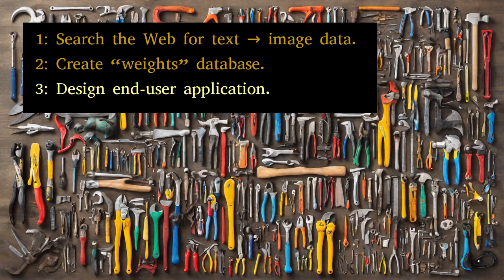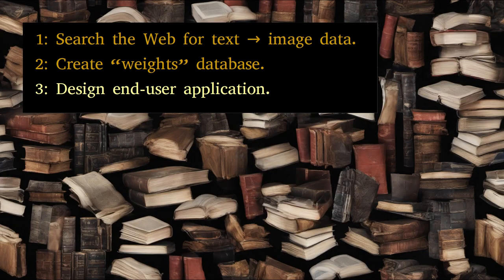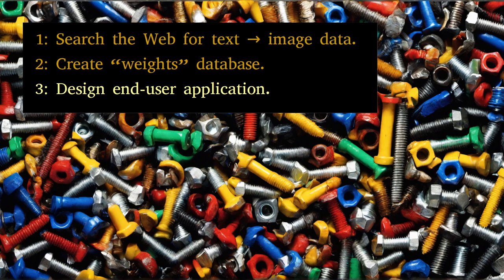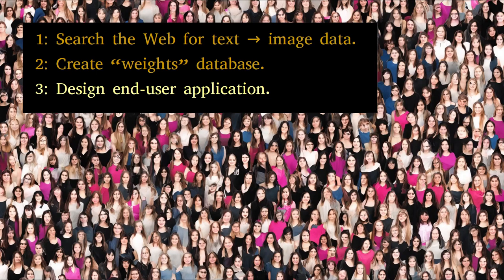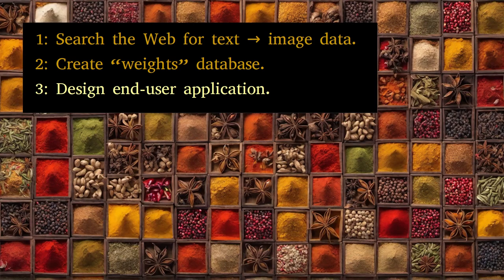Phase three: design an end-user application that accepts user entries, called prompts, and creates images that show a topical and stylistic correlation with the prompt. The resulting application is no ordinary data processor. AI's image creation doesn't rely on an old-style database that strictly links words and images. Instead, it creates a multi-dimensional matrix that assigns weights or probabilities to the connections between words and images.